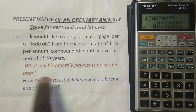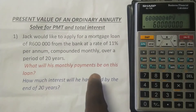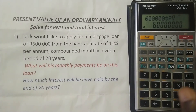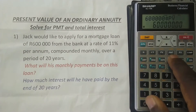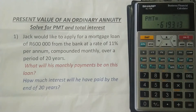Now we want to find the payment — what will his monthly payments be on this loan? We press COMP, which stands for compute, and then PMT, which stands for payment. The calculator gives us the monthly payment he needs to make on this loan if he gets it: 6,193 rand and 13 cents. That's how you do it using this financial calculator.